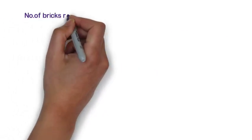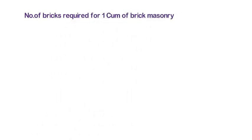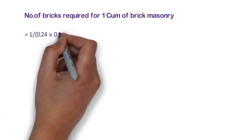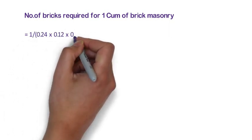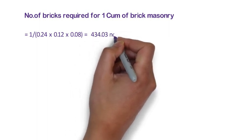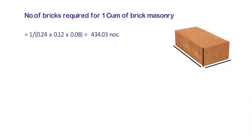First, we will calculate the number of bricks required for 1 cubic meter of brick masonry. The formula is 1 divided by (0.24 x 0.12 x 0.08) is equal to 434.03 numbers. Here I have considered 10mm cement mortar in between the bricks, hence I have added 10mm in length, width and height of the brick.